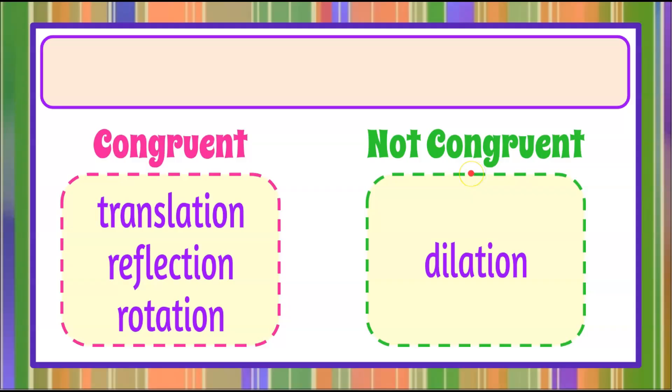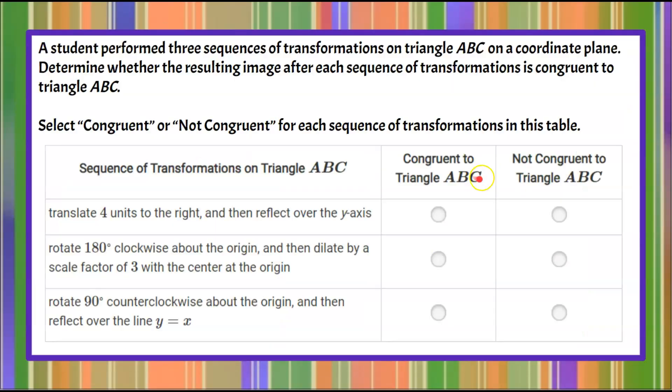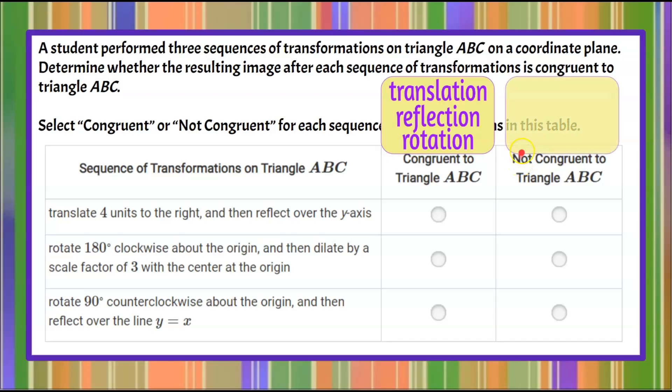So now that we understand congruent and not congruent, let's take this information back to our problem. So we're going to bring that forward. So if it's congruent to triangle ABC, it's going to have been a translation, a reflection, or a rotation. If it's not congruent, the image will have been a dilation of the original triangle. So now when we look at each of these three sequences, we're going to look at the command. What transformation was done to the triangle?